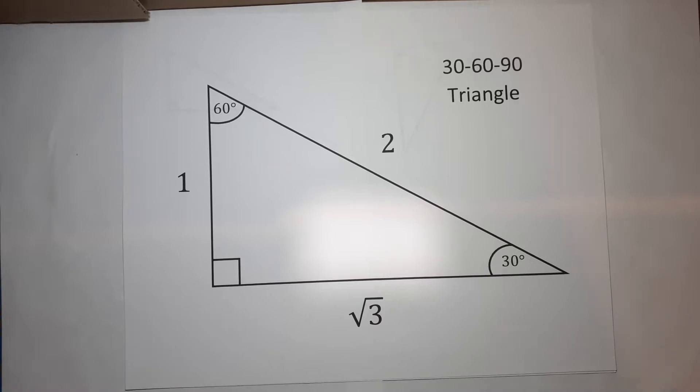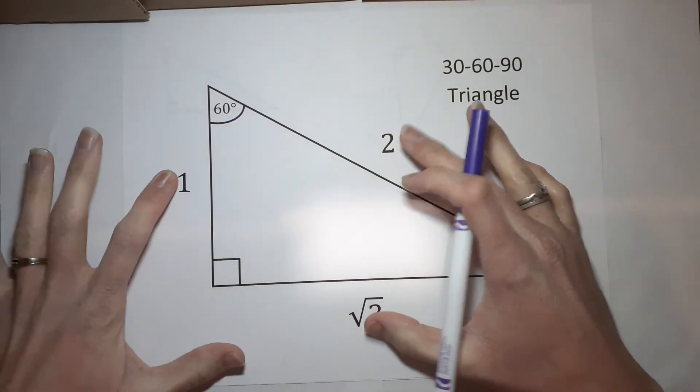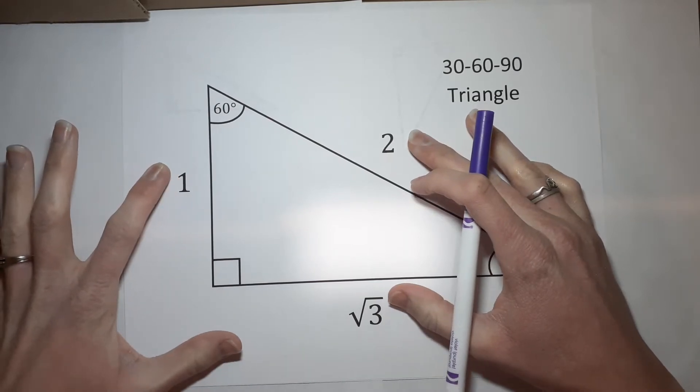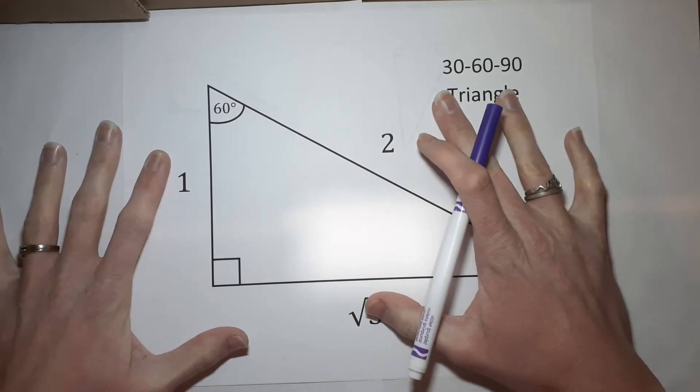Just like our 45, 45, 90 had sides that were related to each other in a certain way, so does this one. The hypotenuse, the one across from your right angle is always two.